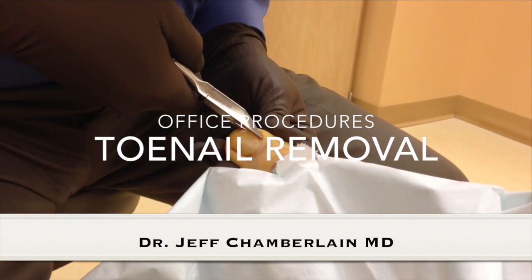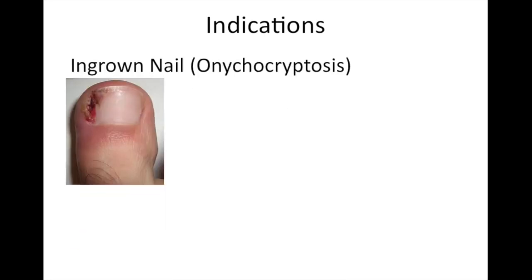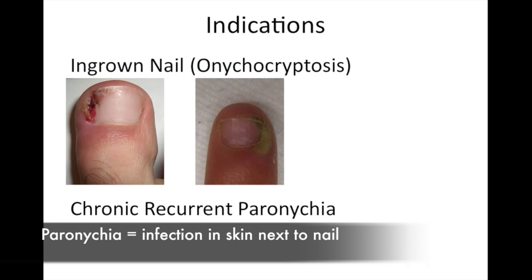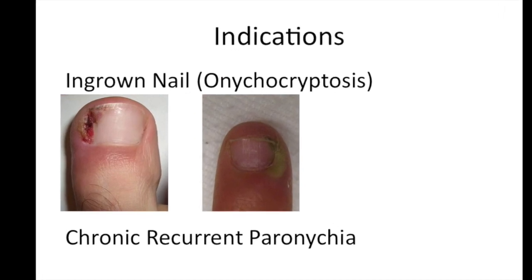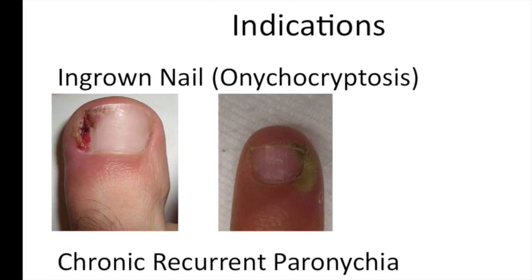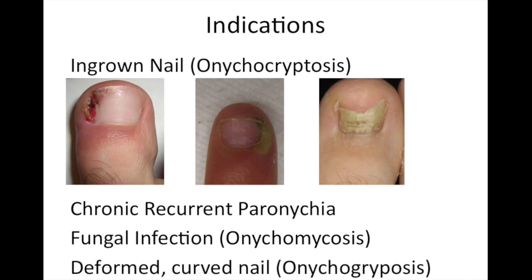There are multiple indications for toenail removal. We have onychocryptosis, or ingrown toenails, and chronic recurrent paronychia — these two often go together, as chronic ingrown toenails typically cause recurrent infections. We also have onychomycosis, which is a fungal infection, or onychogryposis, which is a deformed nail.